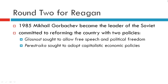Mikhail Gorbachev became the leader of the Soviet Union in 1985, committed to reforming the country with two policies: Glasnost, which sought to allow free speech and political reform, and Perestroika, which sought to adapt capitalistic economic policies.